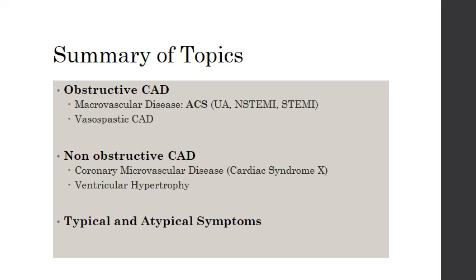Obstructive CAD is the traditional ACS that we're used to. This is the disease of the epicardial arteries, known as macrovascular disease. We're also going to briefly review Prinzmetal's angina, also known as variant angina, which I've denoted as vasospastic CAD just to keep it consistent with the category of obstructive CAD. Next, we're going to talk about non-obstructive CAD, which encompasses a relatively newer designation called coronary microvascular disease. This is notably different from epicardial disease in that it is a disease of endothelial dysfunction within the capillary system in the myocardial wall. This is also known as cardiac syndrome X.